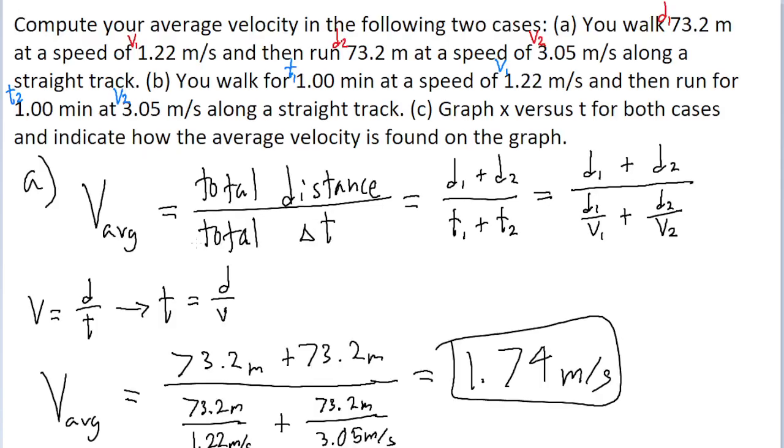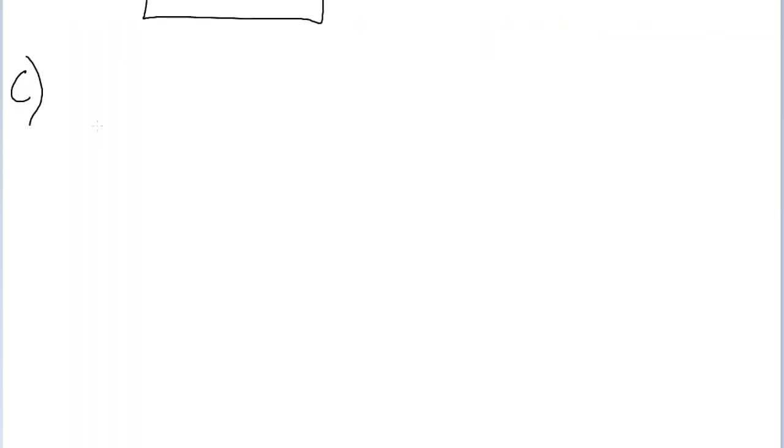Part C of the problem is asking us to graph x versus t, so position versus time, for both of the previous parts of the problem, and then include some indication of the average velocity. I'm just going to set up a pretty basic coordinate axes for each part of the problem. First, let's start with part A, where we're given the distances, but not the times. So the x-axis is going to be the vertical axis, and the time axis is the horizontal axis.